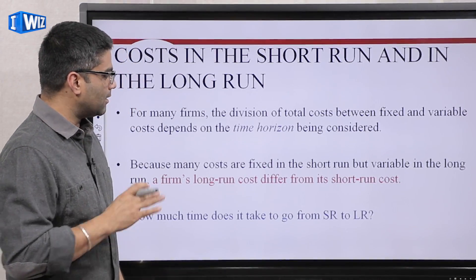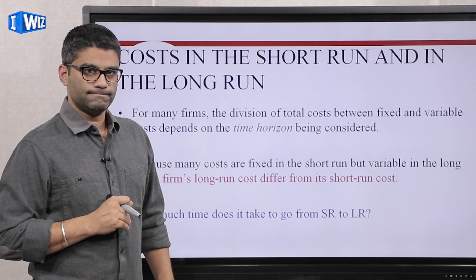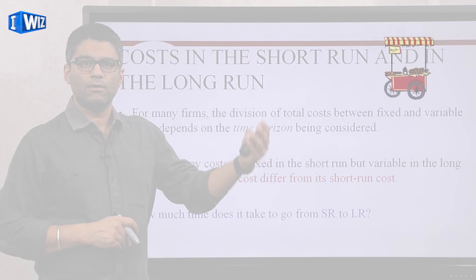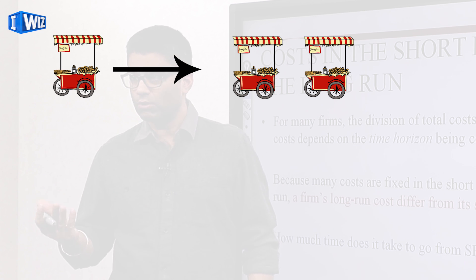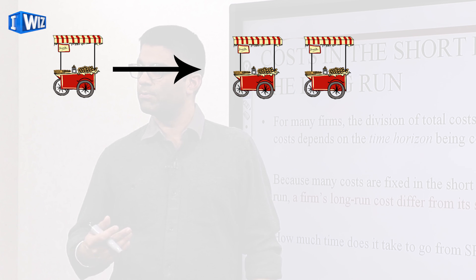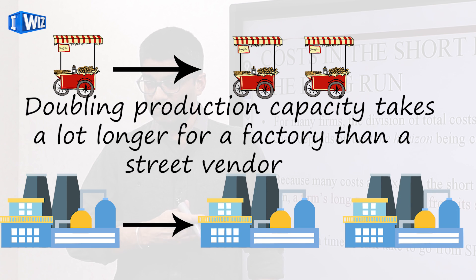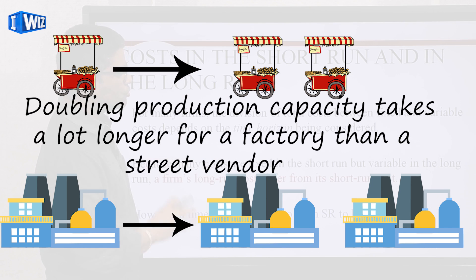Let me ask you a question — pause your video and think about it before you listen to my answer. How much time do you think it takes for a producer to go from short run to long run? The answer is that it depends on what you're producing. If you are a street vendor selling food, the amount of time it takes to double your production is probably a day at most — you can buy a cart and your inputs very easily. But if you're running a factory producing cars, it takes much longer to build a huge new factory. So the difference between short and long run varies depending on what you're producing.